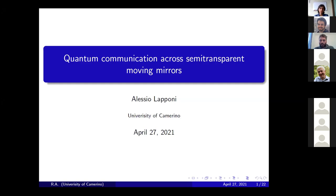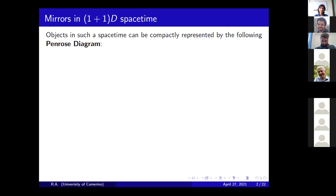Thank you. This is the work I've done for my master thesis on quantum communication across semi-transparent moving mirrors. The aim is to consider semi-transparent moving mirrors in a quantum field theory in curved spacetime point of view, and to see if the effects arising from this theory can improve quantum communication. Mirrors are described in a one-plus-one dimensional spacetime. Objects in such a spacetime can be compactly presented by a Penrose diagram — a compact representation of the whole one-plus-one dimensional spacetime, with the infinities of space and time represented by the vertices of the diamond.